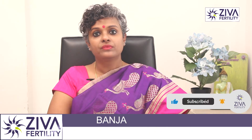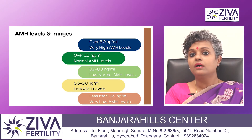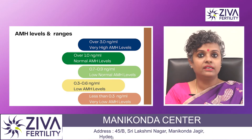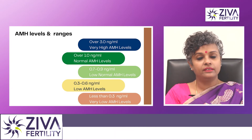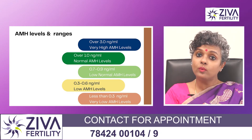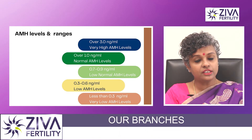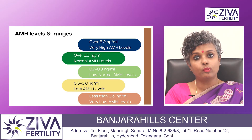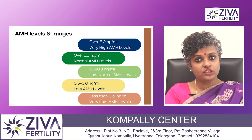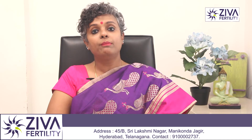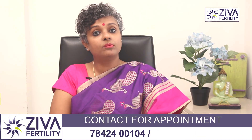What is a normal AMH level? According to fertility studies, the values are interpreted as follows: very high AMH — often an indicator of PCOS — is over 3 nanograms per ml; normal AMH is over 1 nanogram per ml; low normal AMH is 0.7 to 0.9 nanograms per ml; and very low AMH is less than 0.3 nanograms per ml. It is important that your fertility specialist reviews these values together with ultrasonography evaluation to determine what treatment options work best for you.